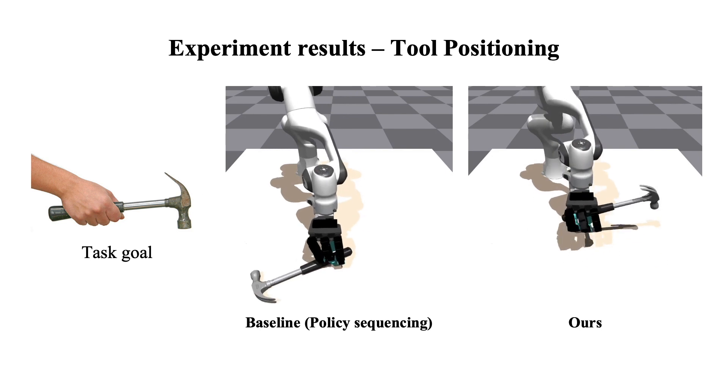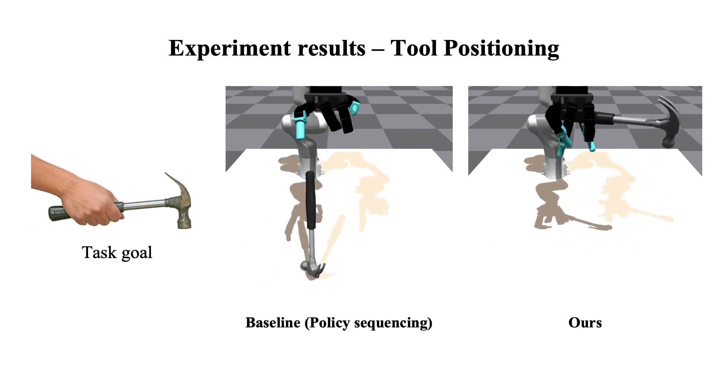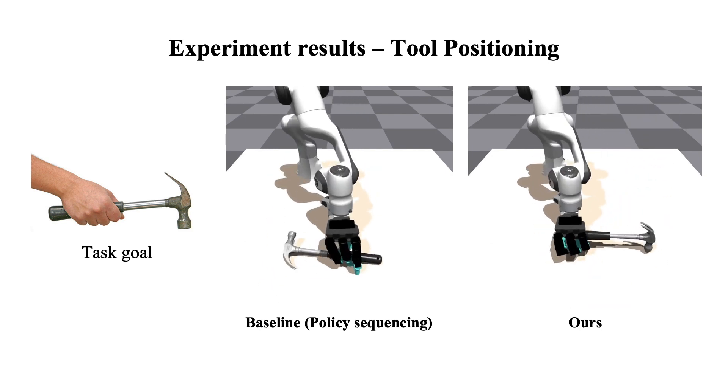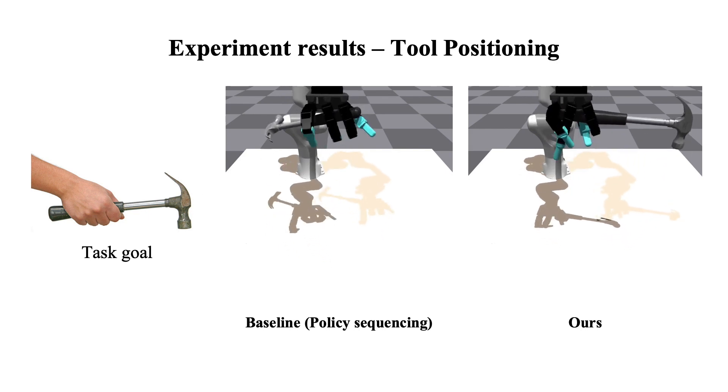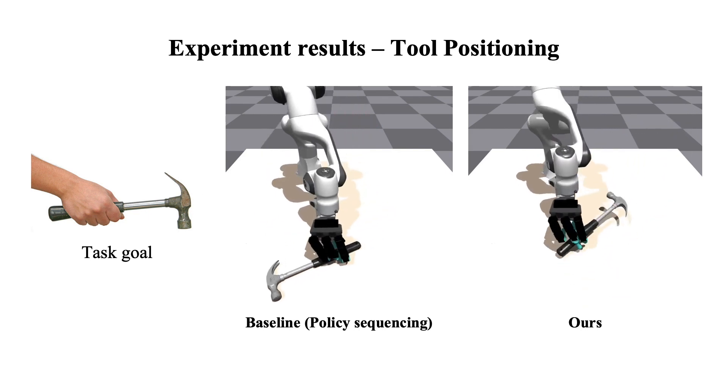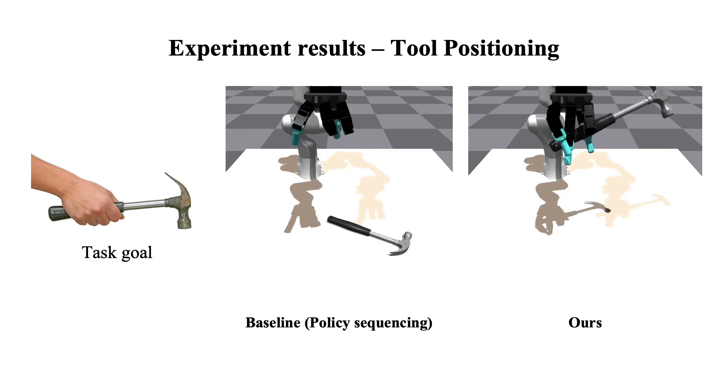We found that our approach significantly enhanced the task success rate when chaining two dexterous policies. The robot learns to adjust the pose of the hammer prior to lifting it, thereby facilitating the subsequent in-hand reorientation skill.